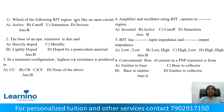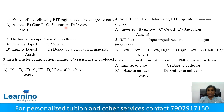Question number 1: Which of the following BJT regions acts like an open switch? Option A: Active, Option B: Cut-off, Option C: Saturation, Option D: Inverse. We will discuss the four regions in BJT and the region where BJT is active.